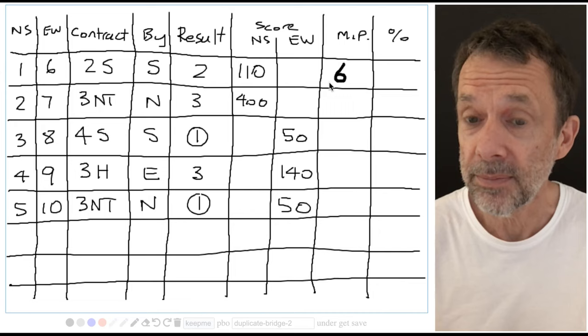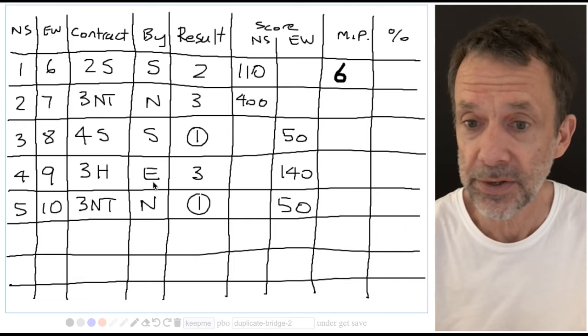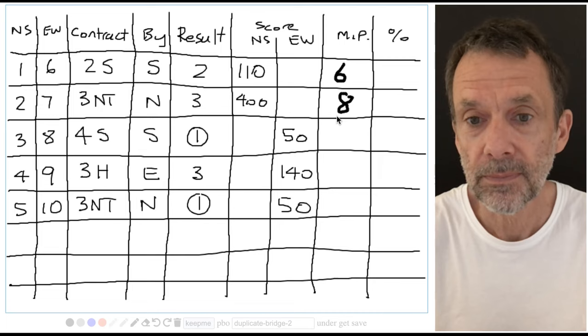Pair two, north-south, 400 beat everybody. 400 is better than 110, better than minus 50, better than minus 140, better than minus 50. So eight match points.